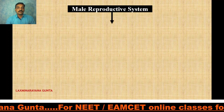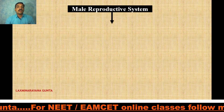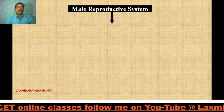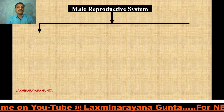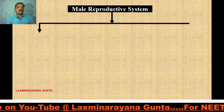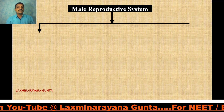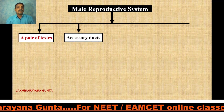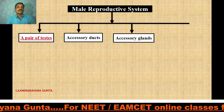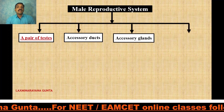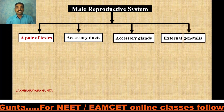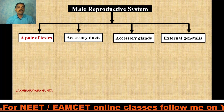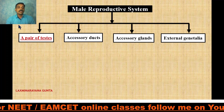Now let us discuss the male reproductive system. The male reproductive system consists of a number of sex organs in the pubic region. In humans it consists of a pair of testes, accessory ducts, accessory glands, and the external genitalia. Let us now discuss all these things one by one.